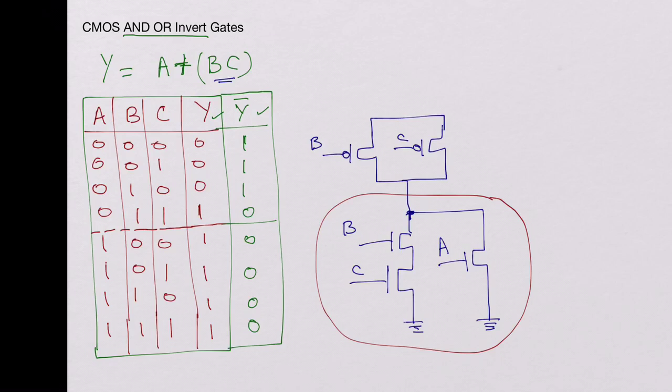And now on the top, it's very obvious that we have to put a P-channel in series with this B and C and then put A on the gate. This would be tied to VDD, and here is your output.